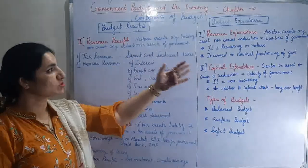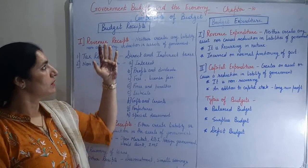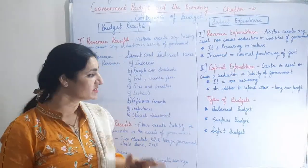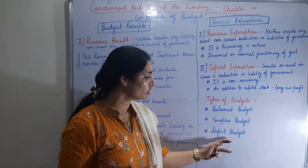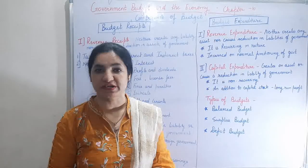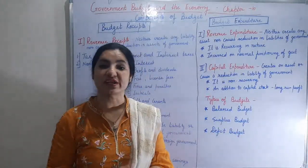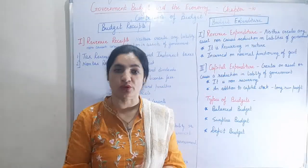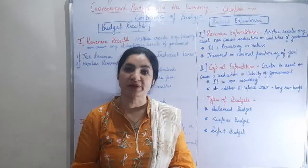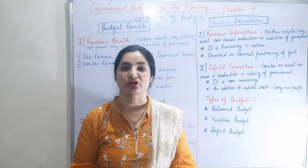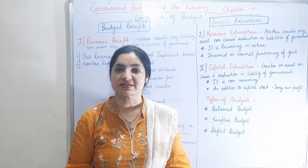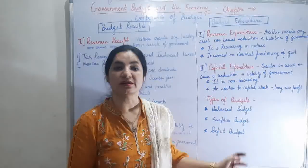There are two types: budget receipts and budget expenditure — these are the components of the budget. Budgets can be a balanced budget, surplus budget, or deficit budget. A balanced budget means receipts are equal to expenditure. A surplus budget means expenditure is less and receipts are more. A deficit budget means expenditure is more than receipts — this is the condition of the Indian economy. In our next topic we will study the deficit budget only.